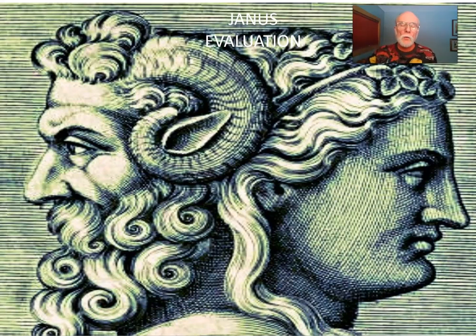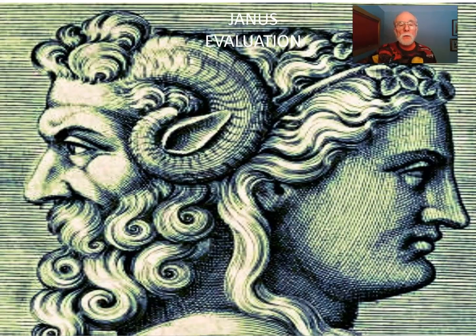Greetings. I'm Michael Quinn Patton with ruminations on Janus evaluation. Janus was the Roman god of transitions — one face looking backward, one face looking forward, one face looking to the past, one face looking to the future. And this evokes two kinds of evaluation: retrospective evaluation and prospective evaluation.